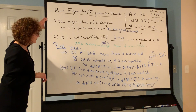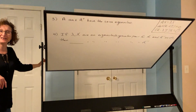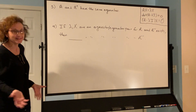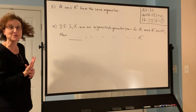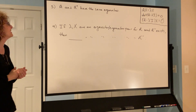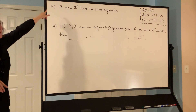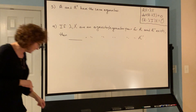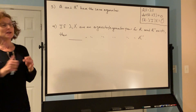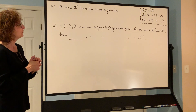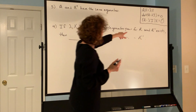That's another nice way of characterizing invertibility and relating it to eigenvalues. Here's the next one: A and A-transpose have the same eigenvalues. Let's see how to show that.